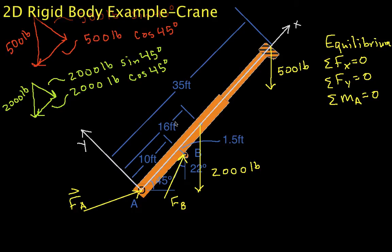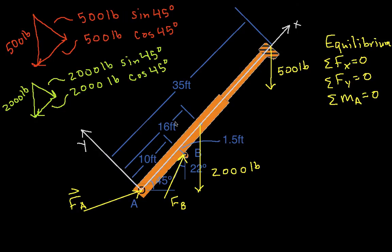Welcome to this video, which is part 2 of our static analysis of this rigid body, which in this case is the boom of a crane. In part 1, we got our free body diagram drawn, and we created x and y axes, and then we found the x and y components of the 500 pound load and the 2,000 pound weight of the crane.